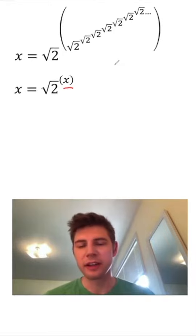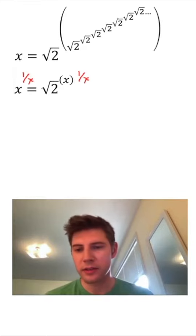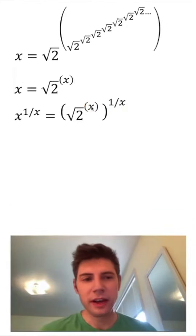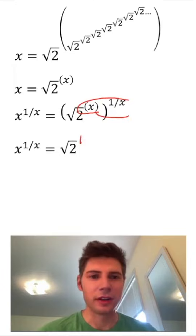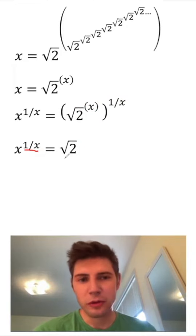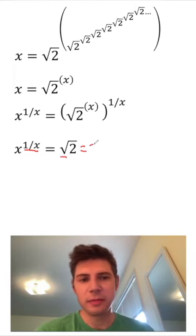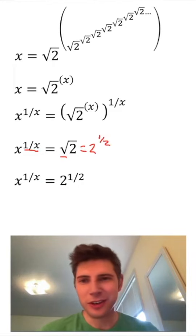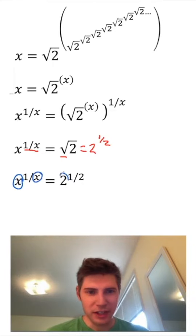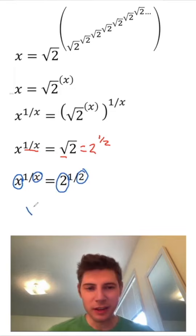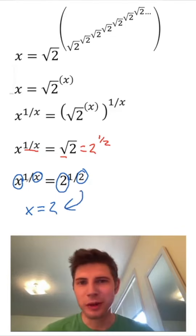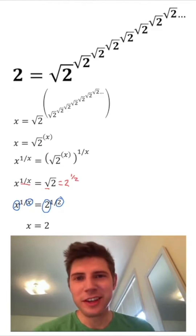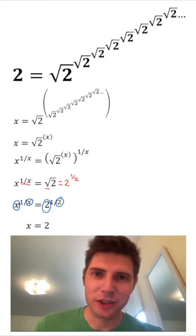I have x on both sides. My goal is to get all the x's onto one side, so I'll exponentiate both sides to the power of 1 over x. The exponents multiply: x times 1 over x is just 1, simplifying to x to the 1 over x equals root 2 to the 1. We can also rewrite the square root as a fractional exponent: 2 to the 1 half. Everywhere I have a blue circle, the terms match on both sides. If we make x equal to 2, that makes both sides the same thing — x to the 1 over x would be 2 to the 1 over 2. So we can conclude that x equals 2. This is how to solve this infinite power tower.